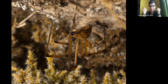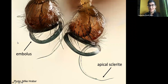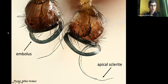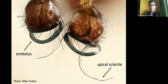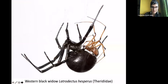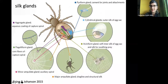The male black widow's pedipalps have corkscrew-shaped ends called emboli. The apical sclerite at the tip can actually break off inside the female's genitalia and act as a mating plug, preventing subsequent males from fertilizing her. This is what it looks like when the male's pedipalps are interacting with the female's genitalia.